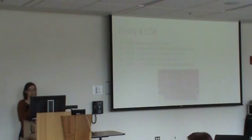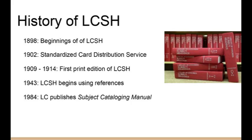I'm going to talk mostly about Library of Congress subject headings, which began in 1898. In 1902, ALA called for more standardization, which is when the card distribution service happened. The first print edition came out from 1909 to 1914, pictured here in the red books. In 1943, LC first started using cross-referencing — the 'see also' notes. And in 1984, LC published their first manual for subject cataloging.